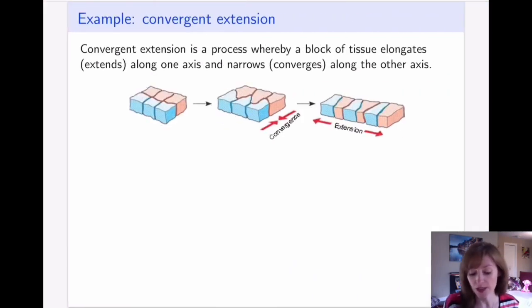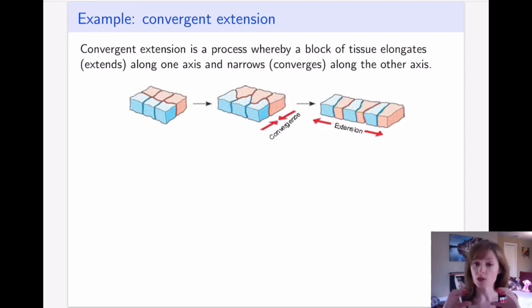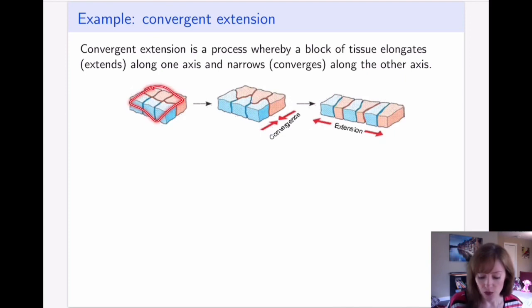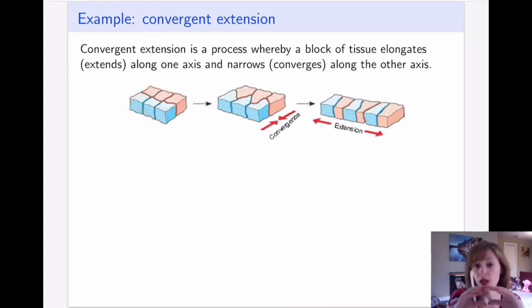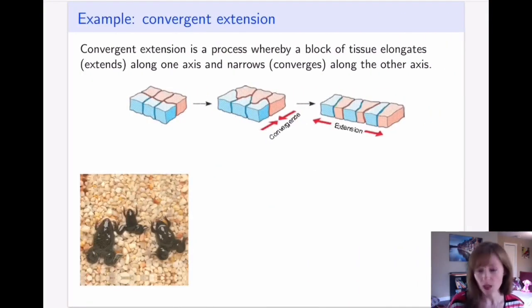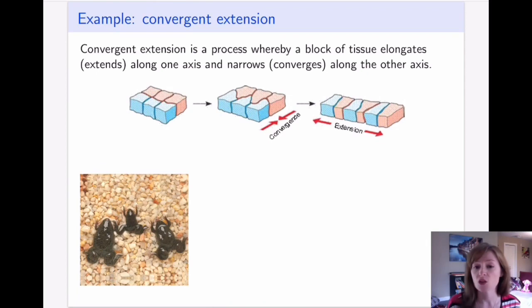Our first example is convergent extension, which is a process by which a block of tissue narrows in one direction and elongates in another. If we start with something rectangular, it will become a rectangle that is narrower and longer. This process is very well studied in fish and frogs due to the large embryo size, its transparency, and its development outside of a uterus — so it's easier to photograph.